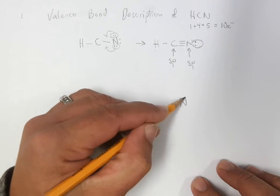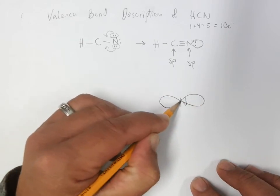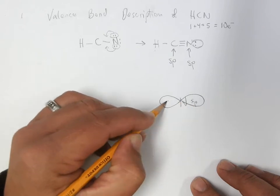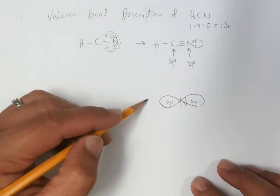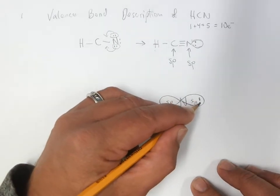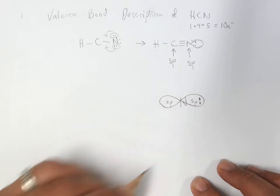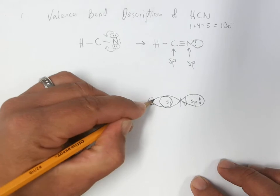So now we go and draw what the sp-hybrid orbitals look like. So nitrogen has two sp-orbitals, and they're in a linear arrangement. One is going to hold the lone pair. It's going to put a pair of electrons in there. And carbon also is sp-hybridized.